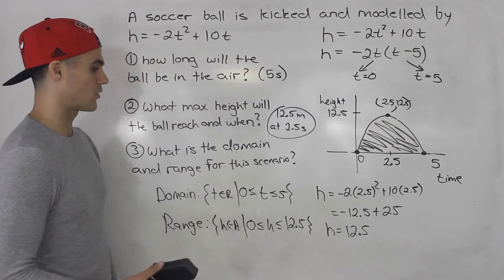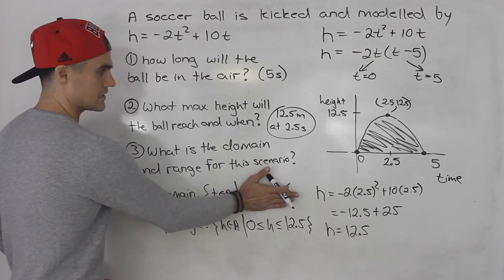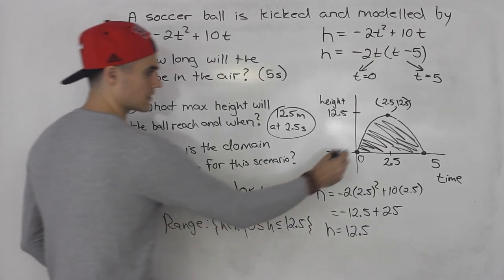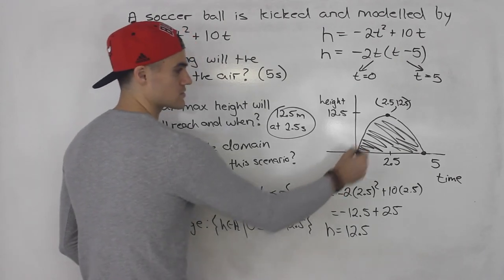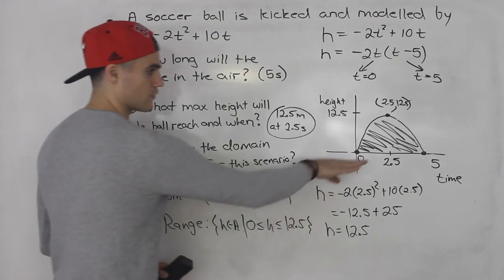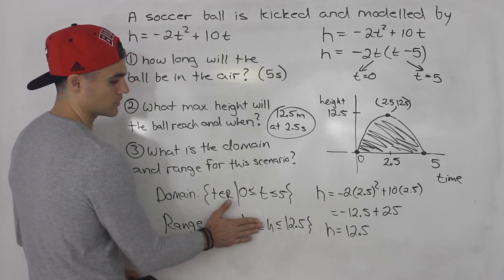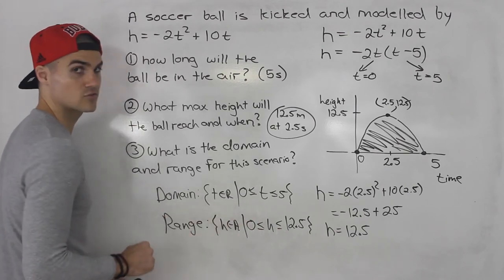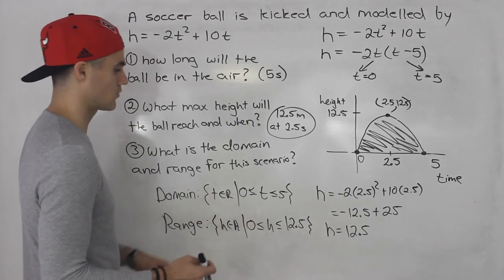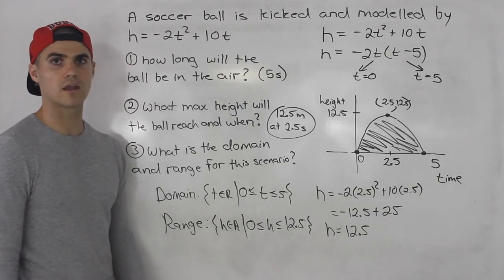But if this was just a regular parabola, then the domain would just be t∈R, right? Because, or x∈R rather, this would just keep going down. And then the y value would be negative as well. So you wouldn't have this lower limit. You'd just have y is less than or equal to 12.5. But again, it's a word problem. So there are limits on the domain and range.